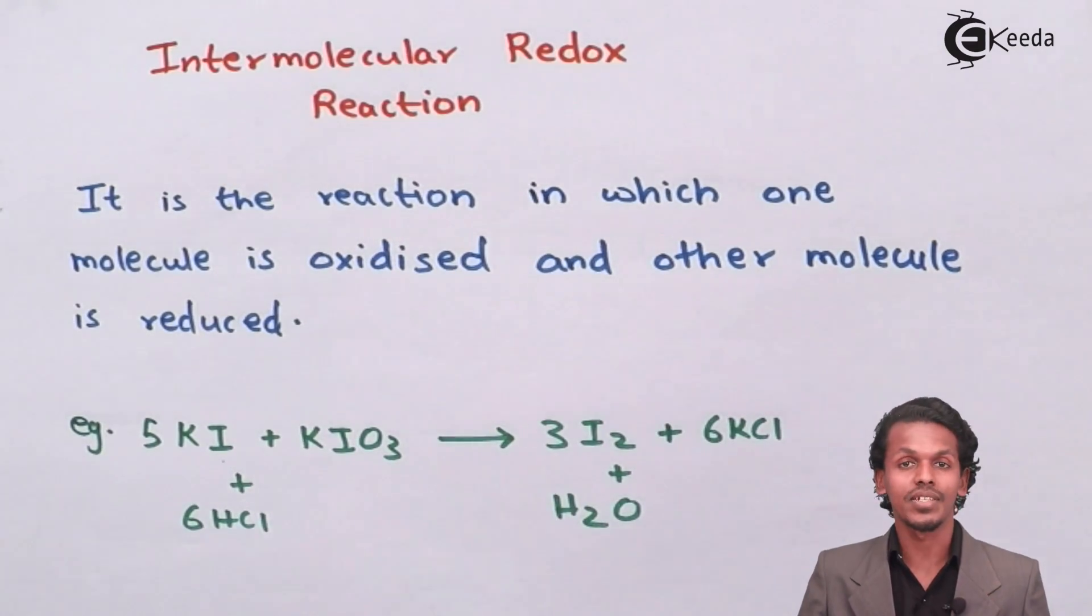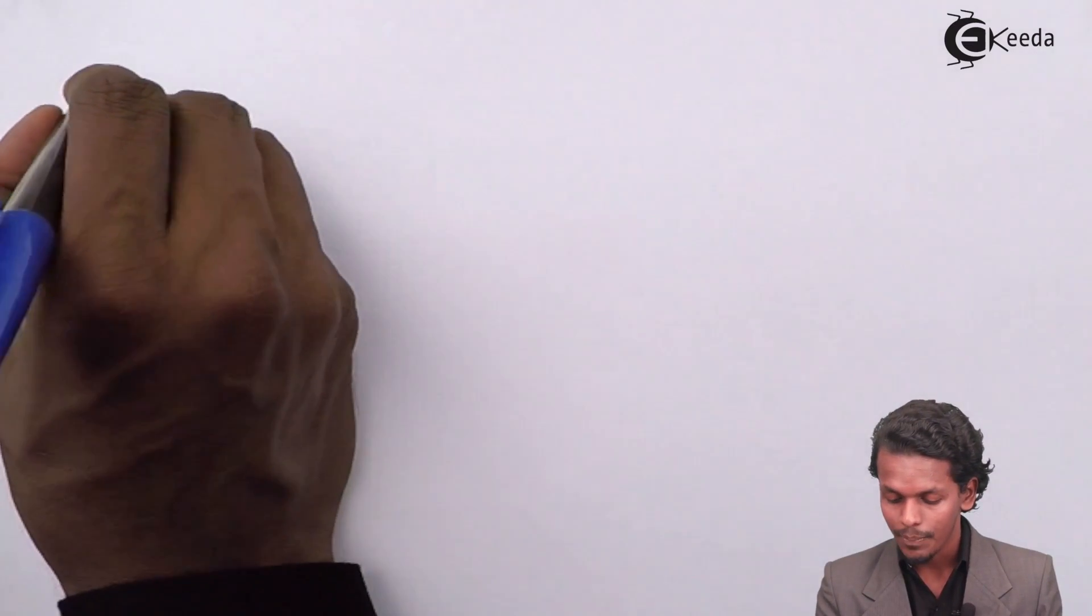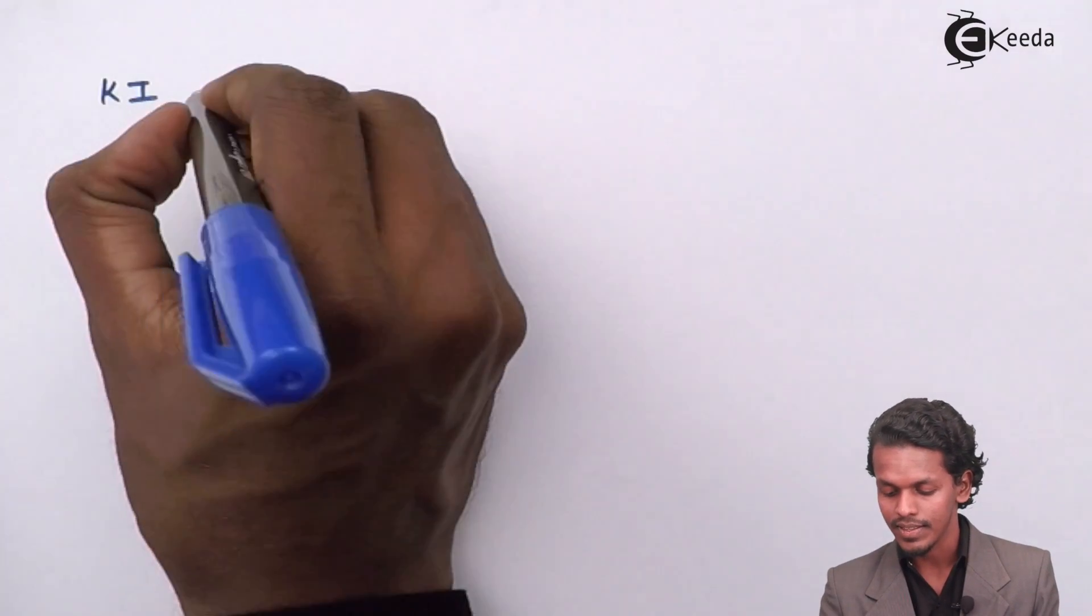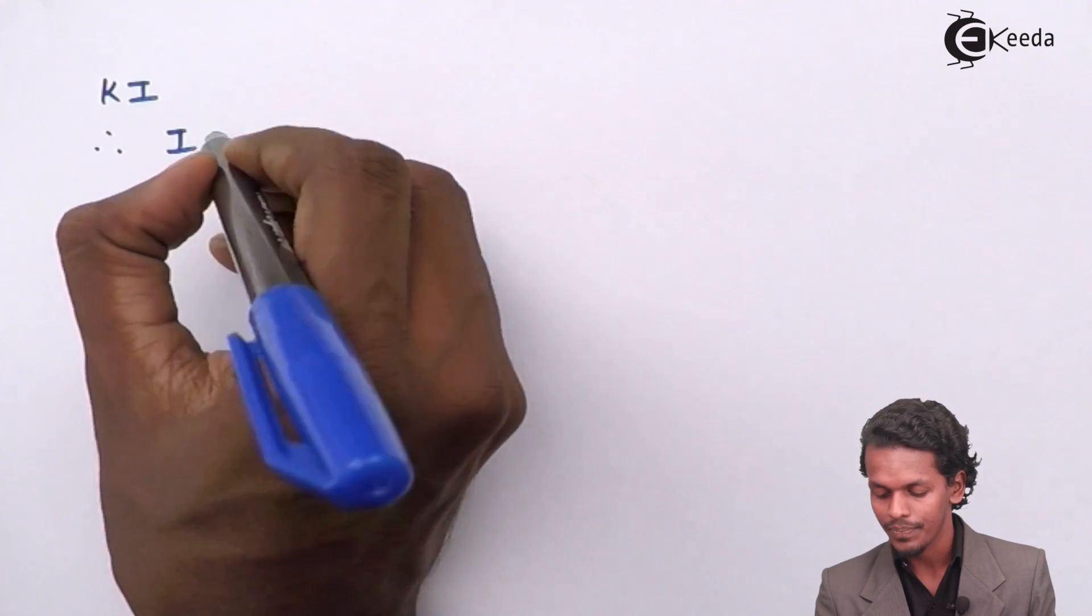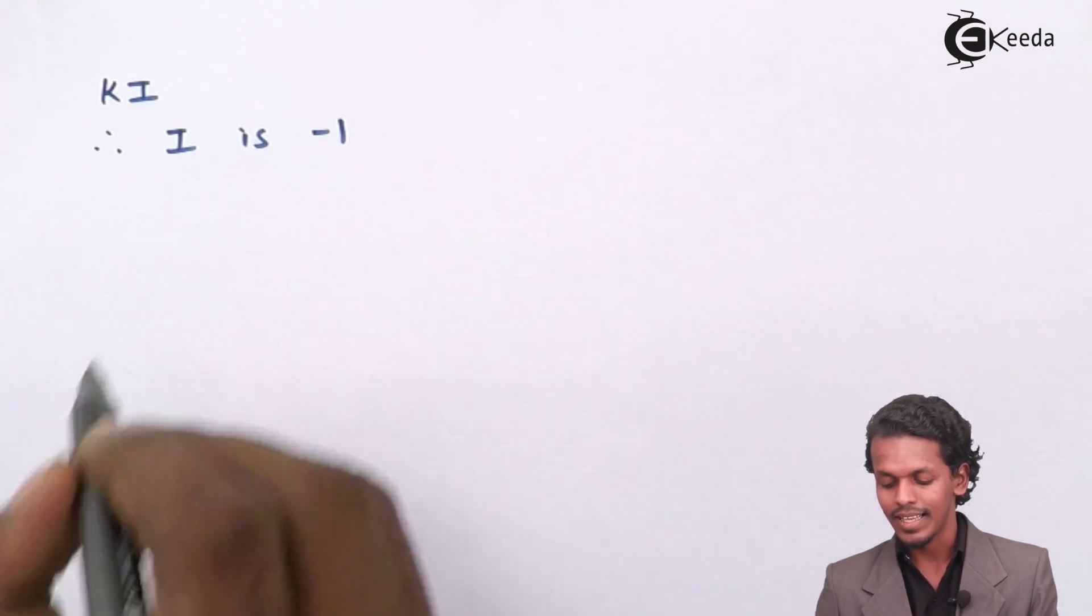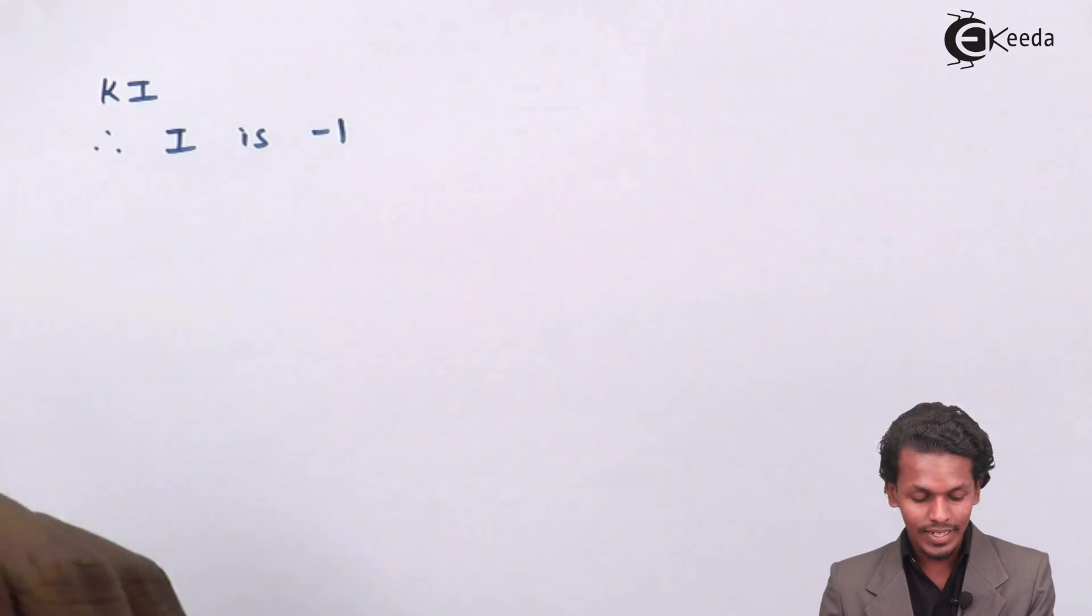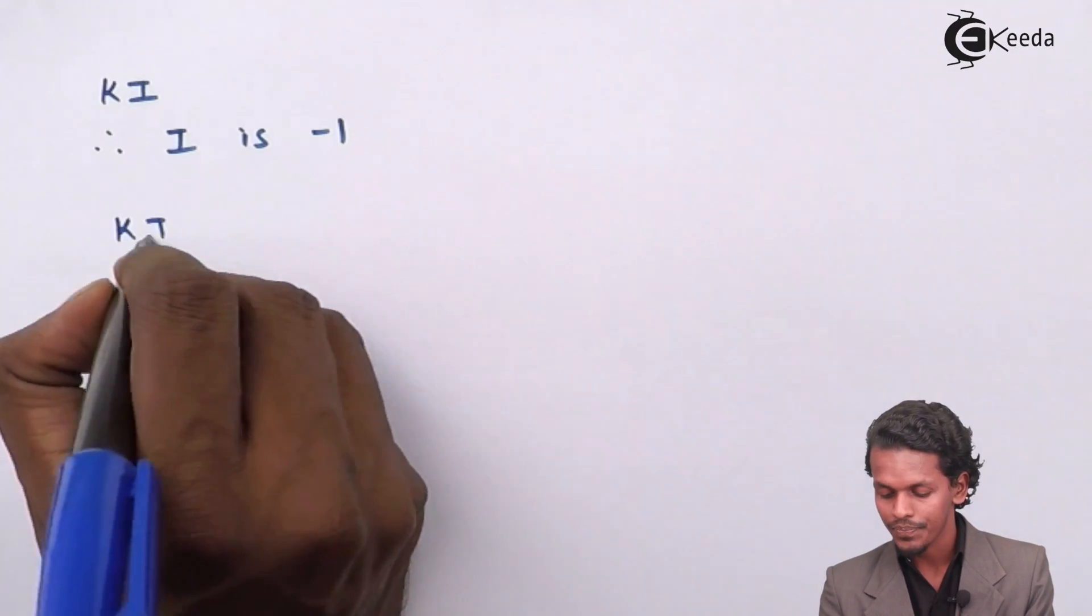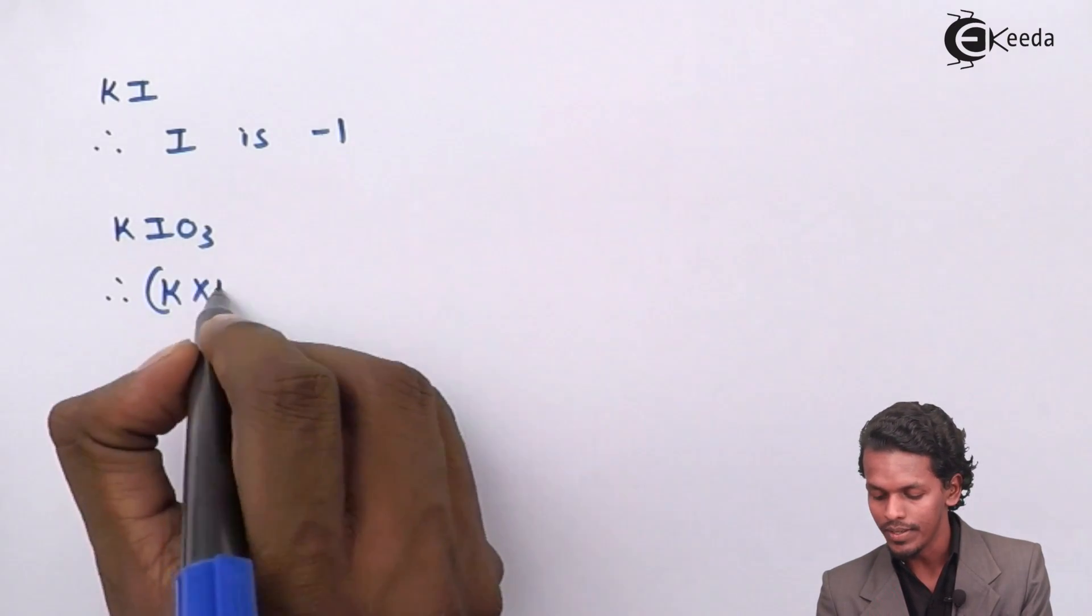Suppose if I consider the redox reaction, if potassium iodide is being considered then the oxidation number of iodine can be written as minus one because the oxidation number of potassium is plus one. But when it comes to KIO3, then the oxidation number can be written as K into one plus one into iodine plus three into oxygen which gives an overall charge of zero.